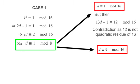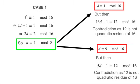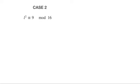Okay, now let's suppose d is congruent to 9 modulo 16, but then 5d-1 is congruent to 12 modulo 16, and from before, we already know that this is not a quadratic residue. Hence, l squared must be congruent to 9 modulo 16 instead.